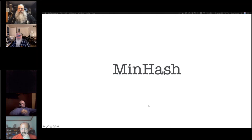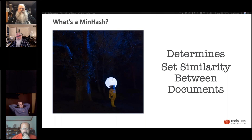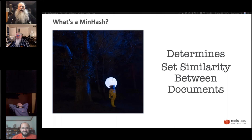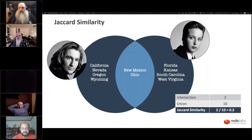Min hash is fun and kind of cool. It determines the set similarity between documents. The set similarity uses something called Jaccard similarity — a really easy calculation where you take the intersection of two sets and divide by the union of those sets. For example, the Jaccard similarity of Scully and Mulder's states in which they've seen UFOs: California, Nevada, Oregon, and Wyoming for one; Florida, Kansas, South Carolina, and West Virginia for the other; both having seen them in New Mexico and Ohio. New Mexico would be Roswell, Ohio would be Hangar 18.